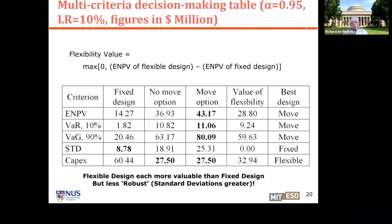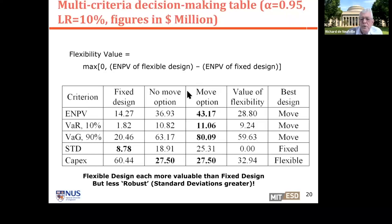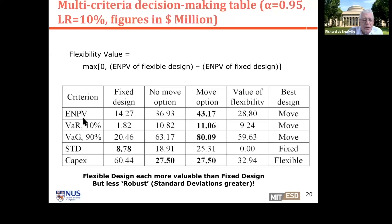So ultimately we looked at, in this example, the various designs: fixed design, no-move, and move option. We evaluated flexibility and which was the best design under various criteria — expected value, downward risk, upward risk, standard deviation, and capital expenditure.